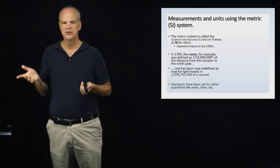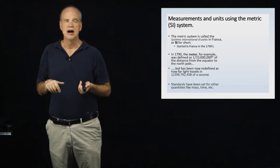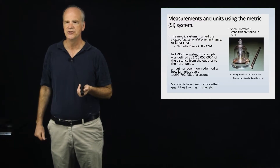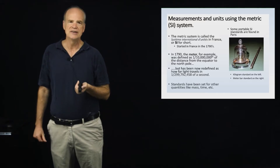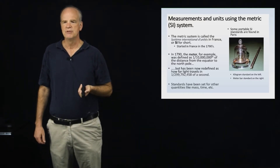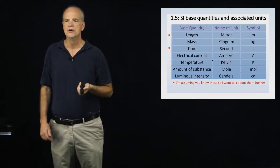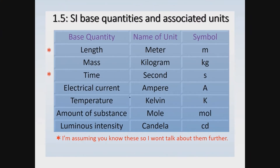Standards have been set for these quantities as well. Here's a picture of some portable standards for the meter and also the kilogram, which are found in Paris. There are seven base quantities you need to know about in chemistry, each with associated units. For example, for the base quantity of length, the base unit is the meter and its symbol is m.